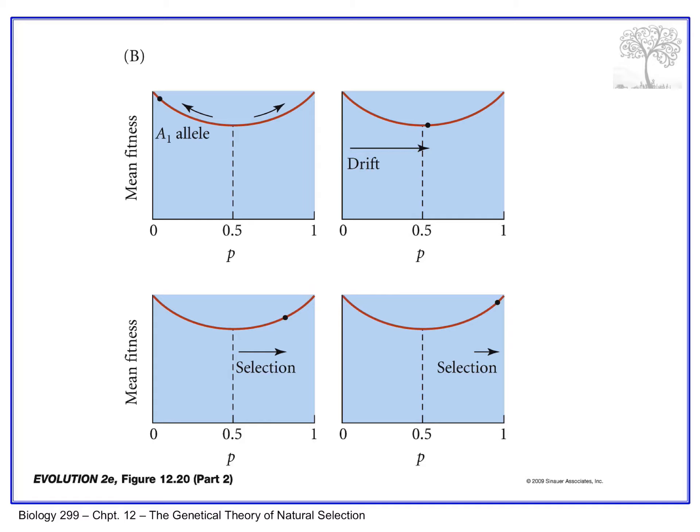When multiple stable equilibria exist — such as all A1A1 homozygotes or all A2A2 homozygotes — selection and drift may interact to achieve what selection by itself is simply not capable of. It's important to consider the two together.